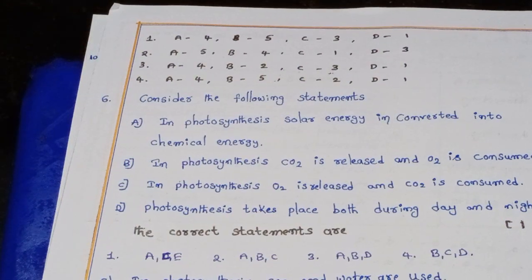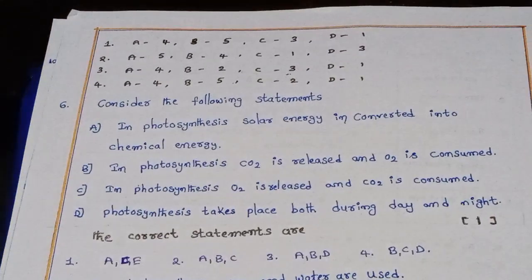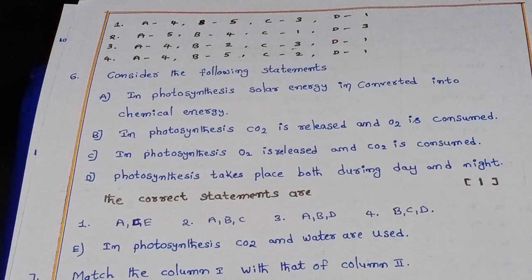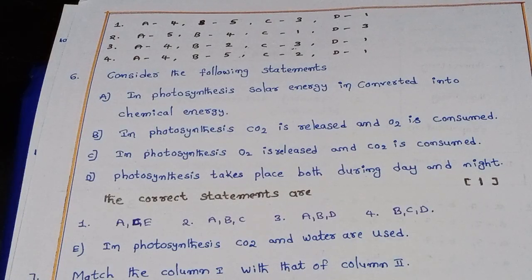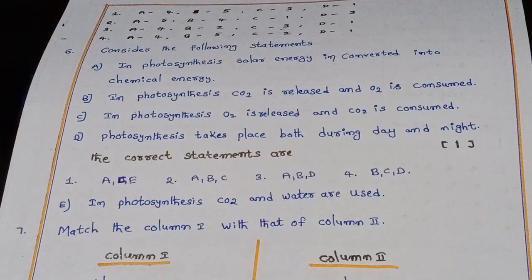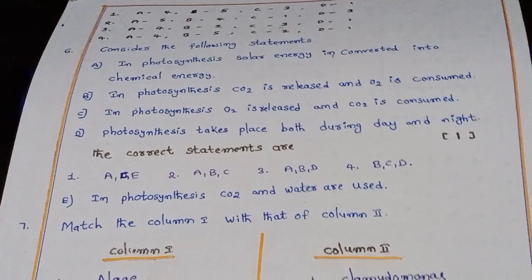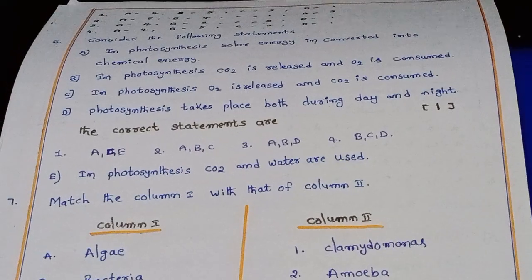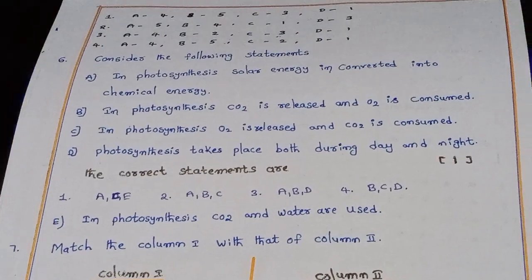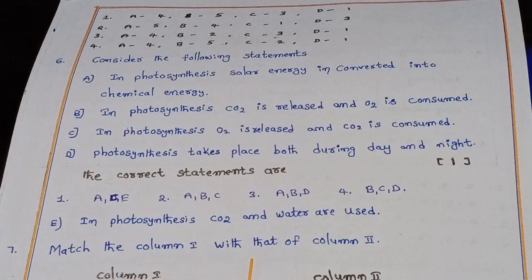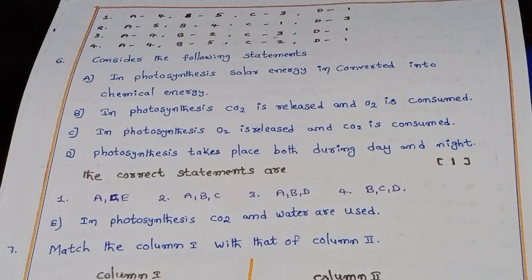Sixth question: Consider the following statements. A: in photosynthesis, solar energy is converted into chemical energy. B: in photosynthesis, CO2 is released and O2 is consumed. C: in photosynthesis, O2 is released and CO2 is consumed. D: photosynthesis takes place both during day and night. E: in photosynthesis, CO2 and water are used. The correct statements are A, C, and E — option one is the right answer.